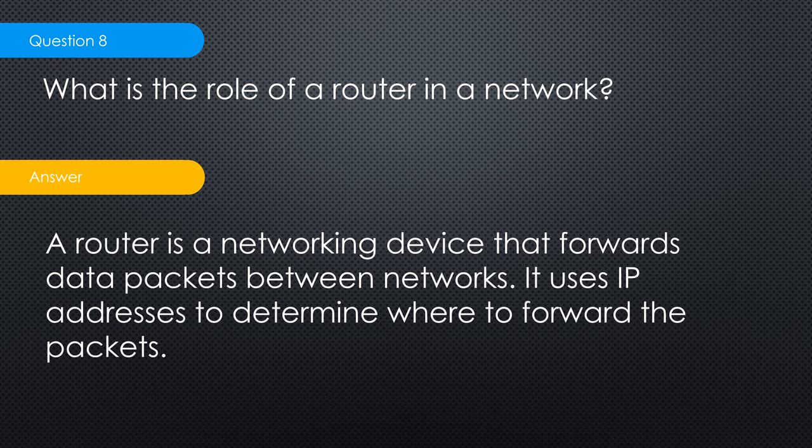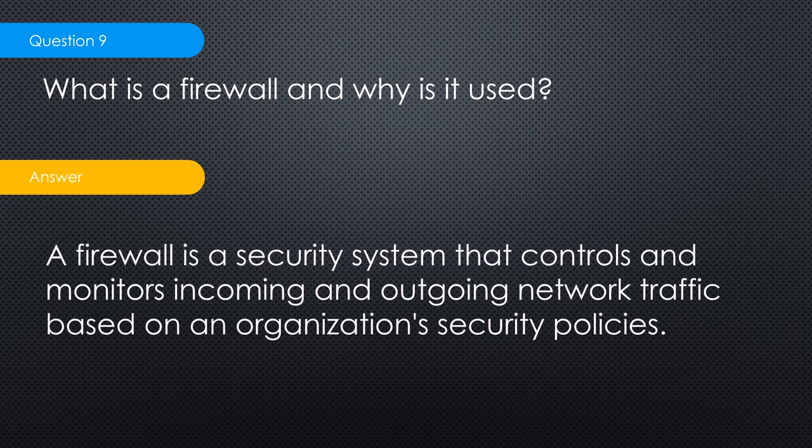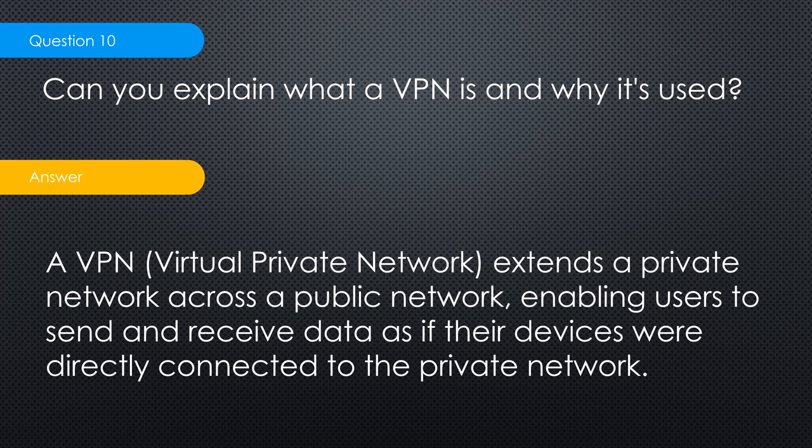Question nine: what is a firewall and why is it used? A firewall is a security system that controls and monitors incoming and outgoing network traffic based on an organization's security policies. Virtually everybody has access to one — that's your Windows Firewall. Hardware firewalls also exist; in one of my videos I showed pfSense installed physically on my network perimeter, so as soon as traffic comes in from the modem it hits the firewall first.